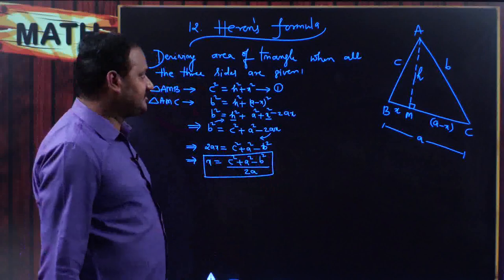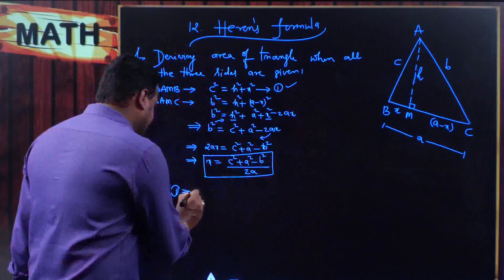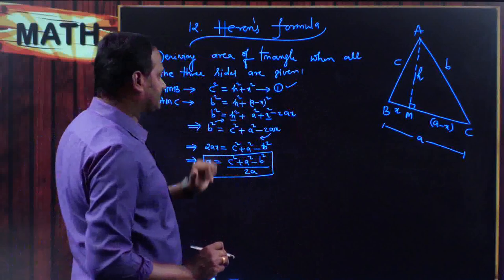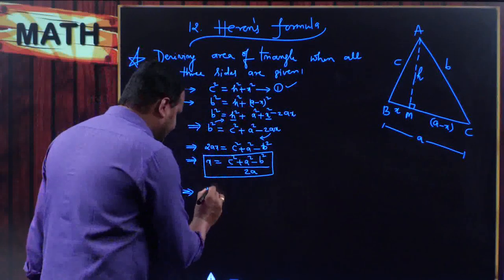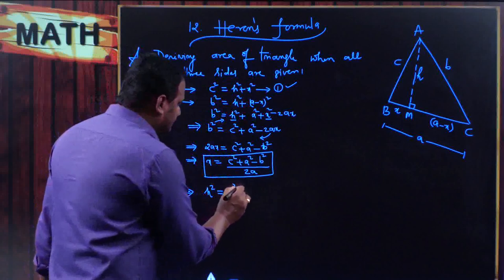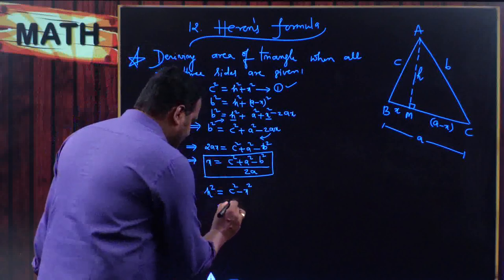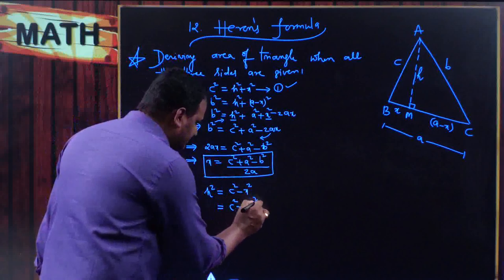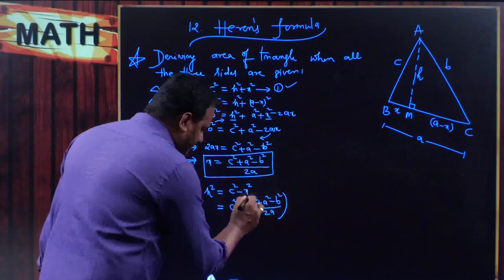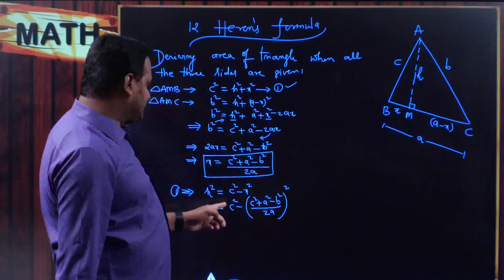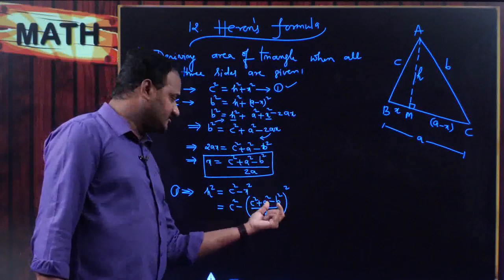After getting the value of x, to get the value of h, substitute back into the first equation. From equation one: c² = h² + x², so h² = c² − x². Substituting x = (c² + a² − b²) / 2a, we get h² = c² − [(c² + a² − b²) / 2a]². This is in the form of A² − B², where A is c and B is the bracketed term.